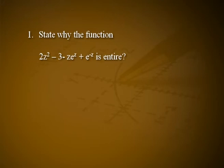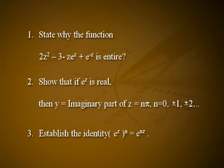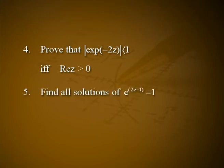You can try to solve the following problems. First: state why the function 2z² − 3 − ze^z + e^(−z) is entire. Second: show that if eᶻ is real, then y (the imaginary part of z) equals nπ, for n = 0, ±1, ±2, ... Third: establish the identity (eᶻ)ⁿ = e^(nz). Fourth: prove that |e^(−2z)| < 1 if and only if Re(z) > 0. Fifth: find all solutions of e^(2z−1) = 1. Also prove that f(z) = eᶻ is an entire function.